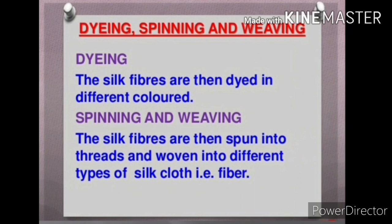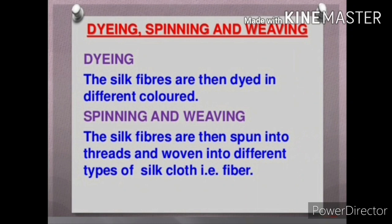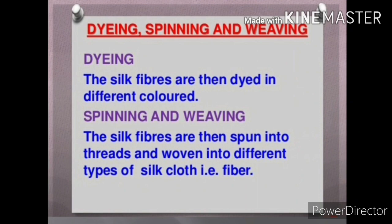Dyeing is the next step — the silk fibers are dyed in different colors. After dyeing, spinning and weaving is the next step. The silk fibers are then formed into thread and woven into different types of silk cloth. You can easily see the fiber spinning and weaving of silk in this diagram.